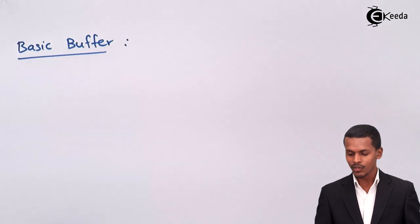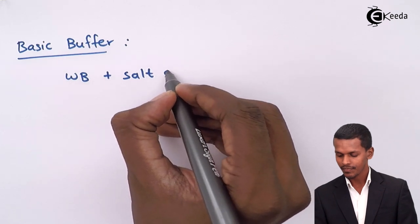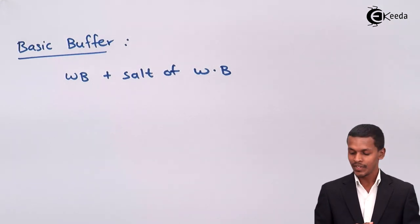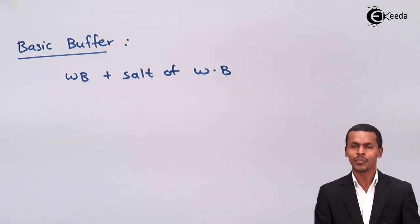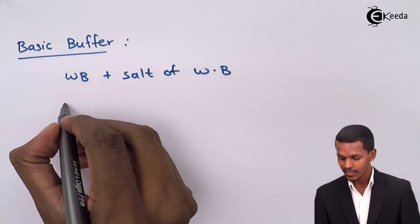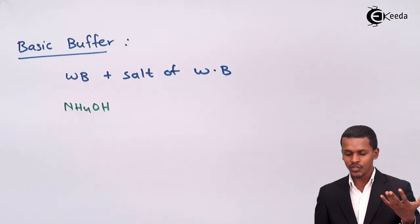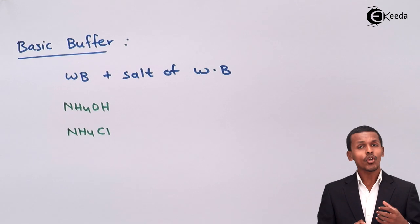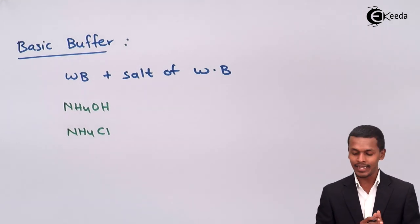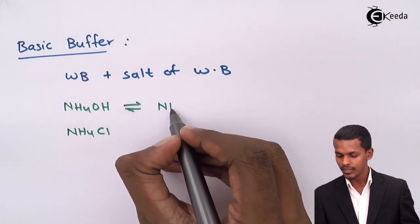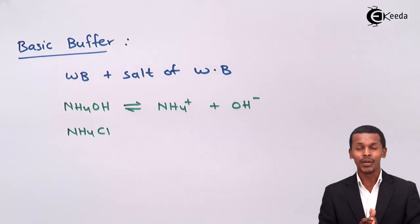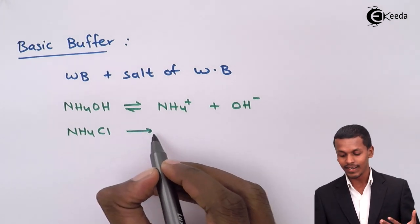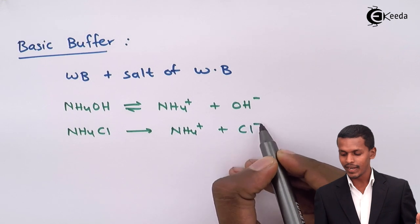A basic buffer is made up of a weak base along with a soluble salt of a weak base that contains a strong acid. For example, the basic buffer consists of NH4OH (weak base) along with NH4Cl (salt of the weak base). NH4OH is a weak base so it dissociates incompletely, maintaining equilibrium to give NH4⁺ and OH⁻. NH4Cl dissociates completely, giving NH4⁺ and Cl⁻.